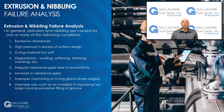In general, extrusion and nibbling are caused by one or more of the following conditions: excessive clearances; high pressure in excess of system design or high pressure excursions; the O-ring material is too soft; degradation such as swelling, softening, shrinking, cracking, etc. of O-ring material by system fluid; irregular clearance gaps caused by eccentricity; increase in clearance gaps due to excessive system pressure; improper machining of O-ring gland, such as sharp edges; or an oversized O-ring which causes excessive filling in the groove.